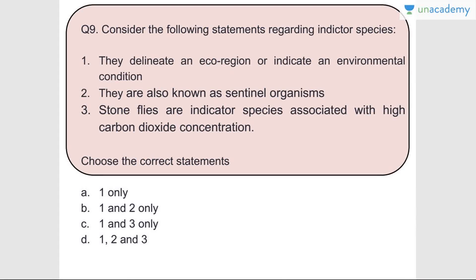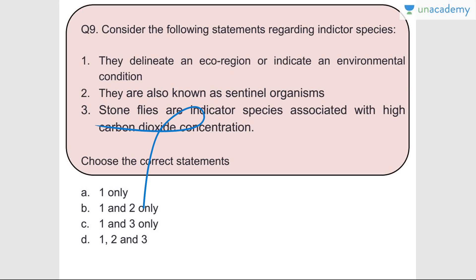Question number nine: Consider the following statements regarding indicator species. They delineate an ecoregion or indicate an environmental condition - correct. They are also known as sentinel organisms - correct. Stoneflies are indicator species associated with high carbon dioxide concentration - wrong. Answer is B. Stoneflies are associated with high oxygen concentration, not carbon dioxide.